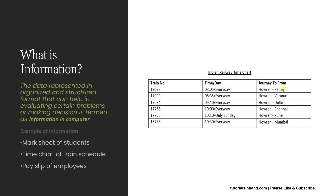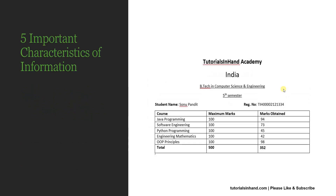There are more examples. Another example can be the mark sheet of a student — you can analyze from it that the student is good in which subject and needs improvement in which subject. Similarly, there is a pay slip of employees; looking at the pay slip would give important information and help the employer make decisions on payment. Based on this, we understand that any information should always be accurate, reliable, timely, and centralized to a certain problem, meaning it should help in solving certain problems.